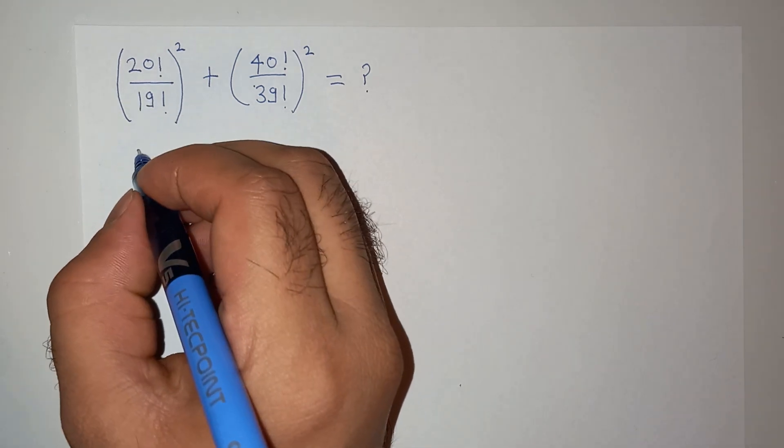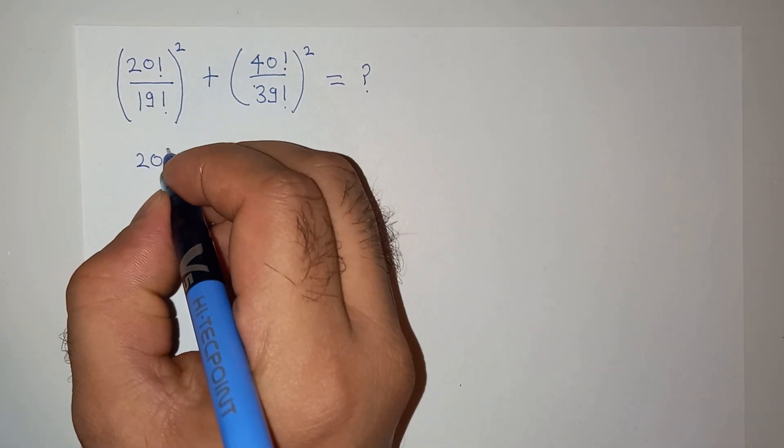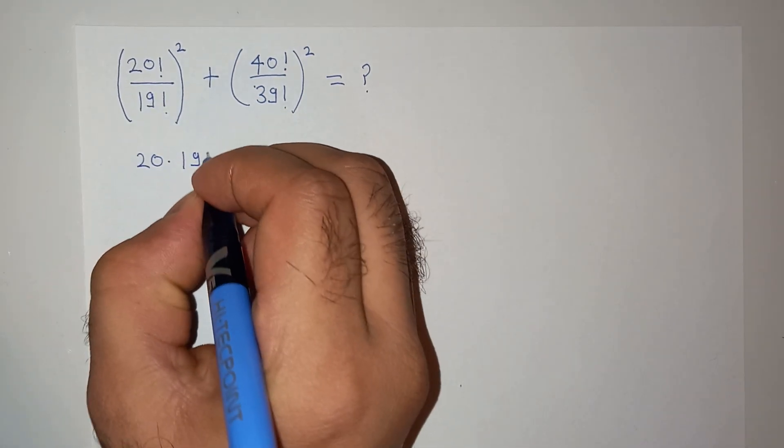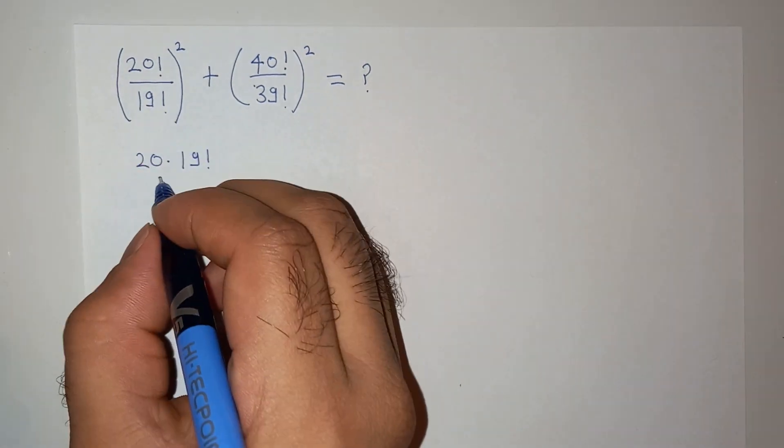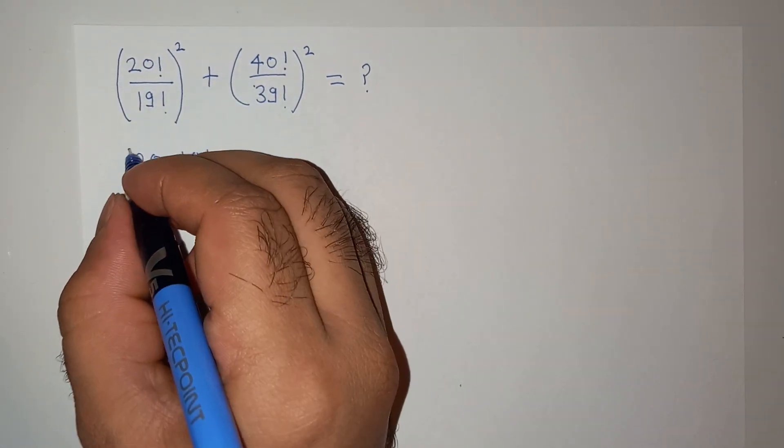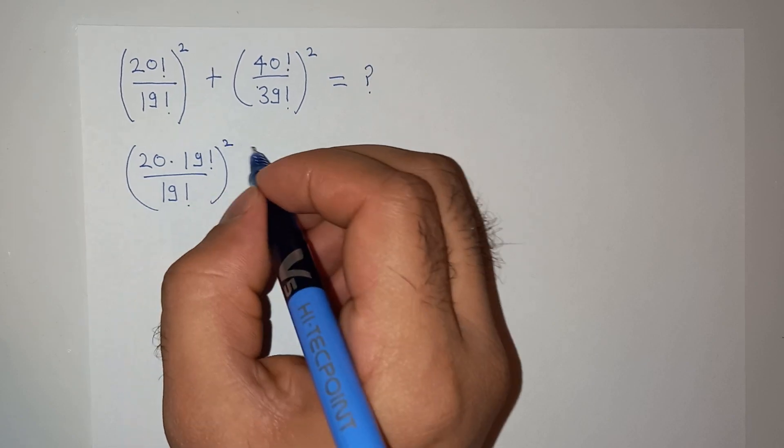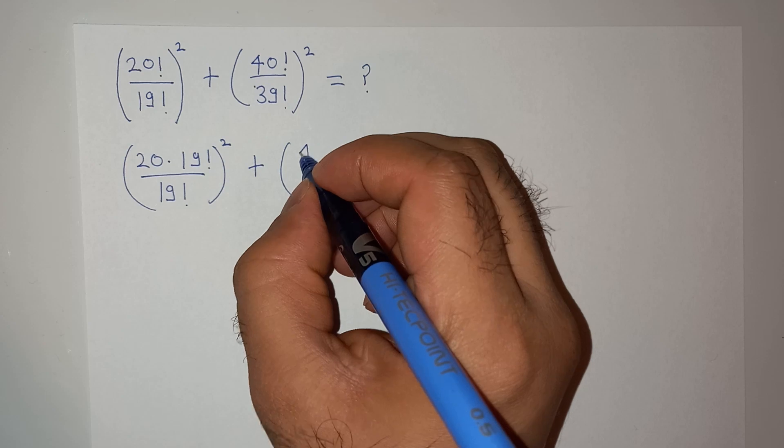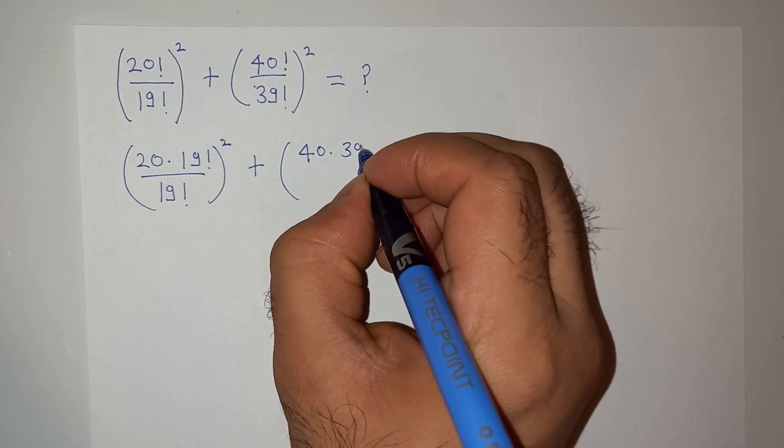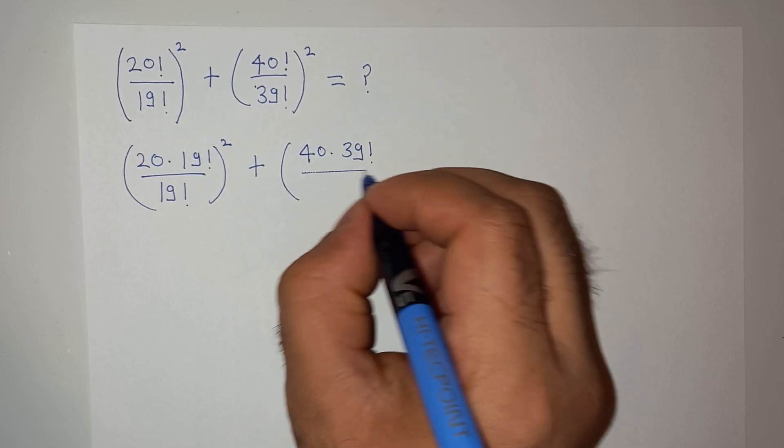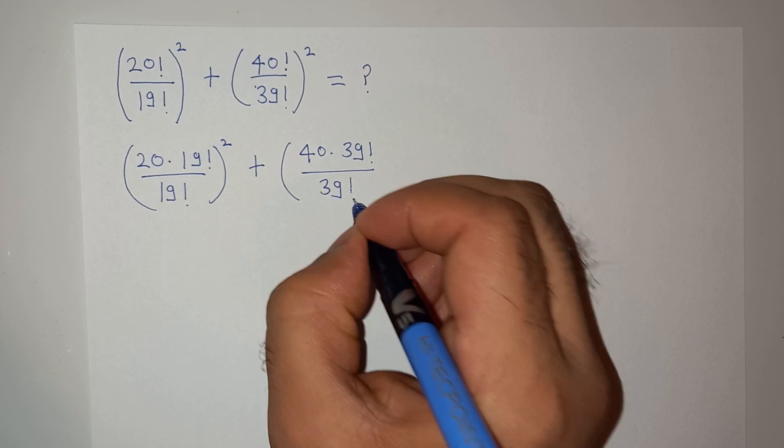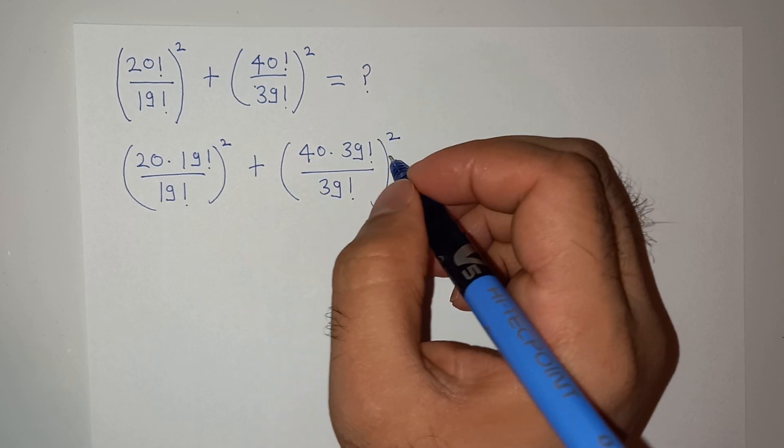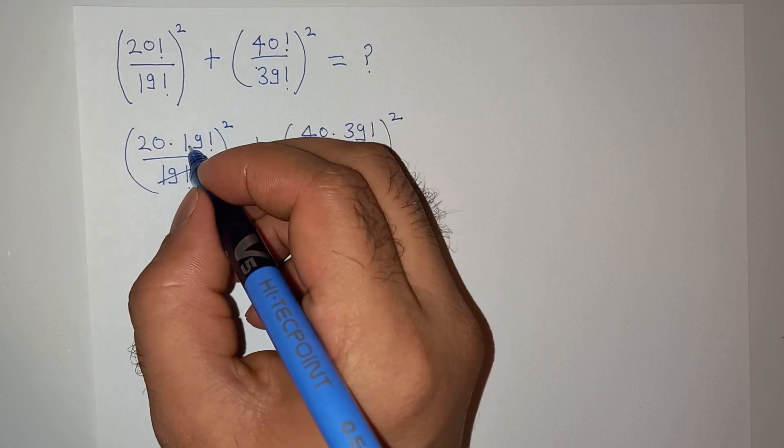To solve this question, I can write this as 20 factorial will be 20 multiplied by 19 factorial, divided by 19 factorial square, plus 40 factorial can be written as 40 multiplied by 39 factorial, divided by 39 factorial square.